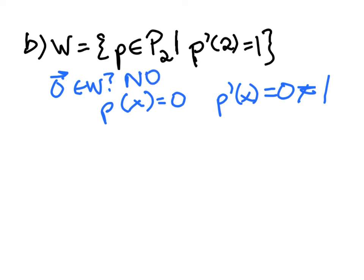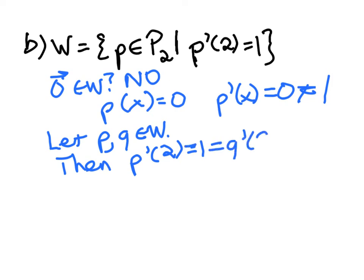But just by the way, if we checked closure under addition, we would say, okay, let P and Q be vectors in W. That means that we're going to assume that P prime at 2 is 1, and so is Q prime at 2.